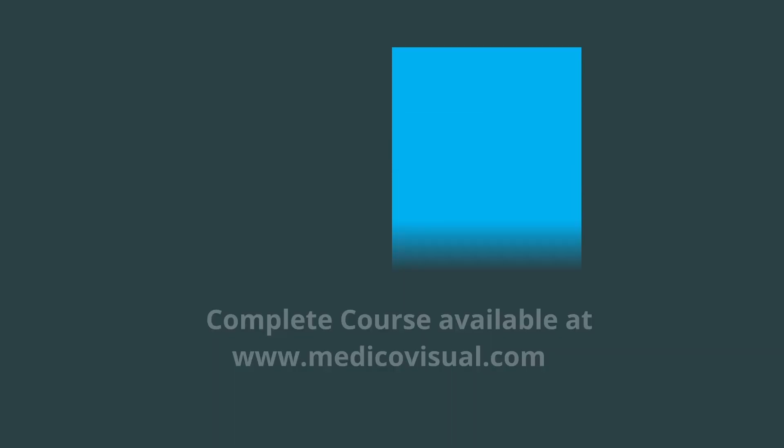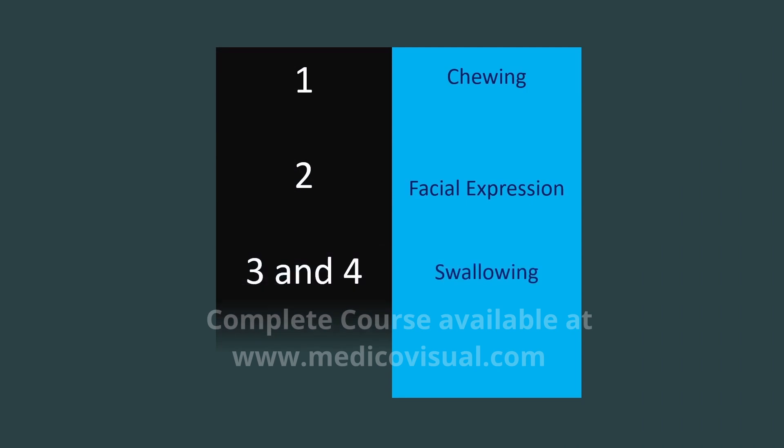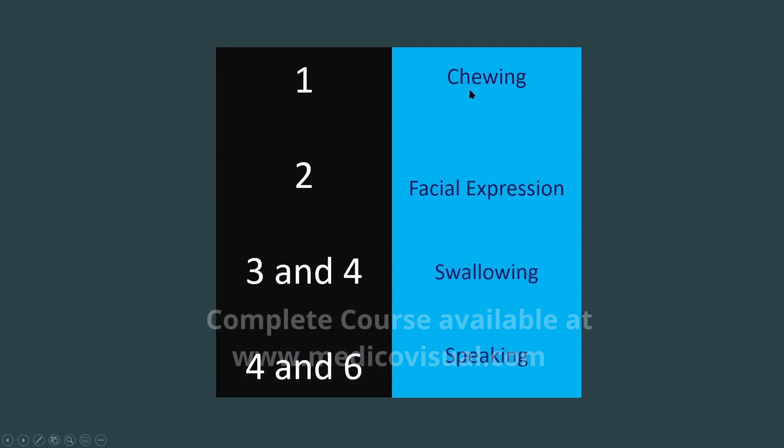The derivatives of the first arch help in chewing. The derivatives of the second arch help in facial expression. The derivatives of the third and fourth arch — mainly the fourth — help in swallowing. And the derivatives of the fourth and sixth arch — mainly the sixth — help you to speak.